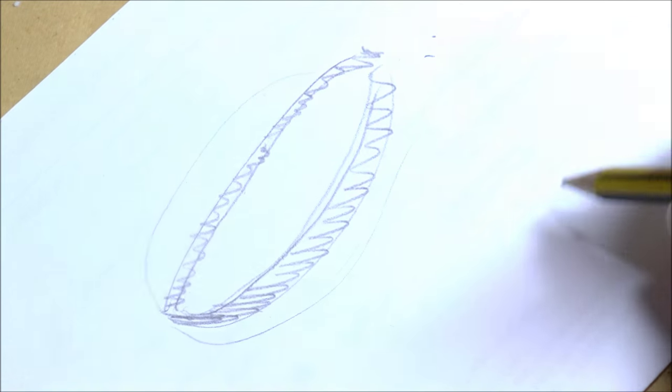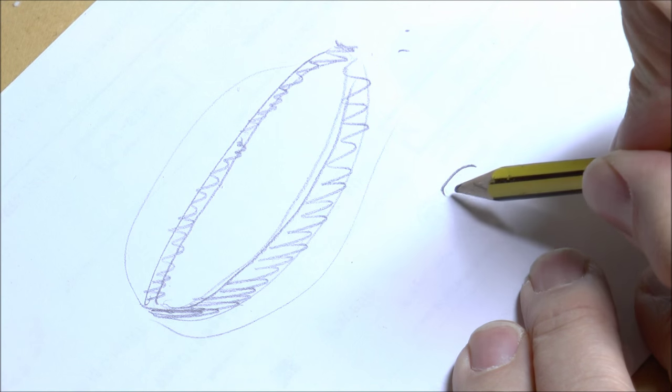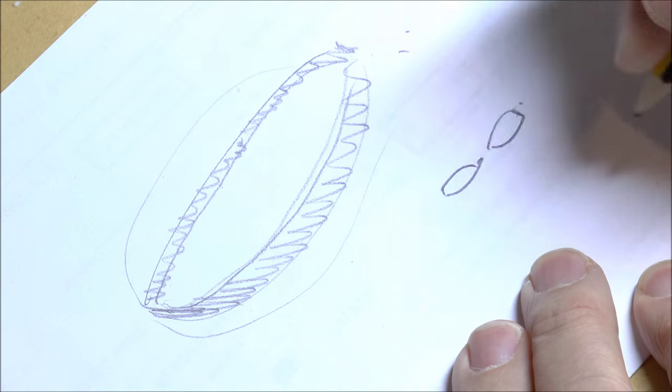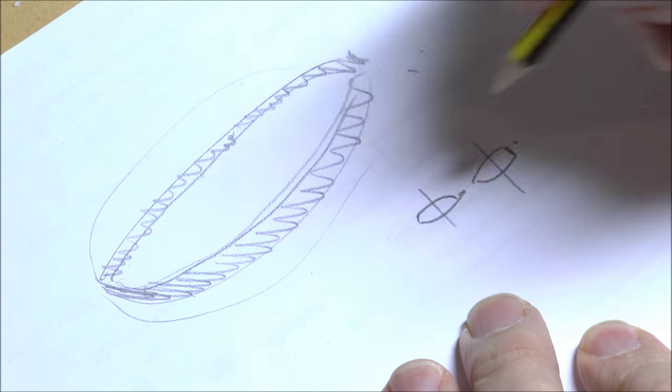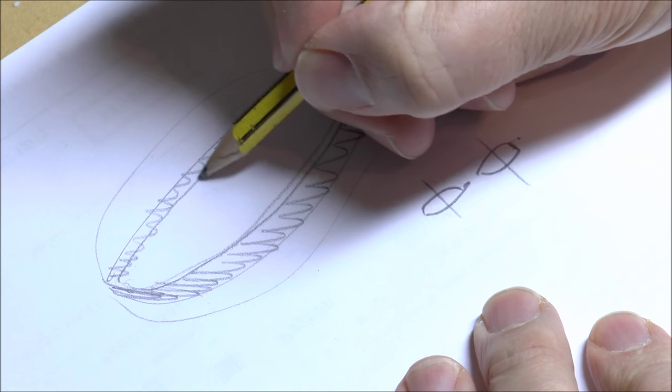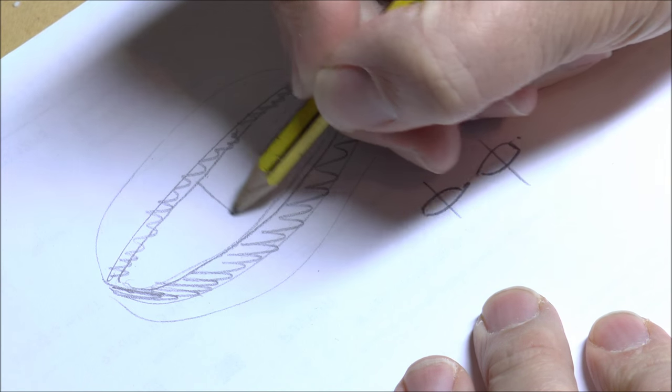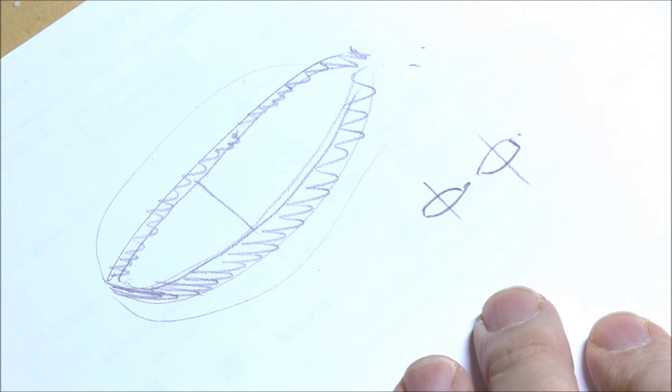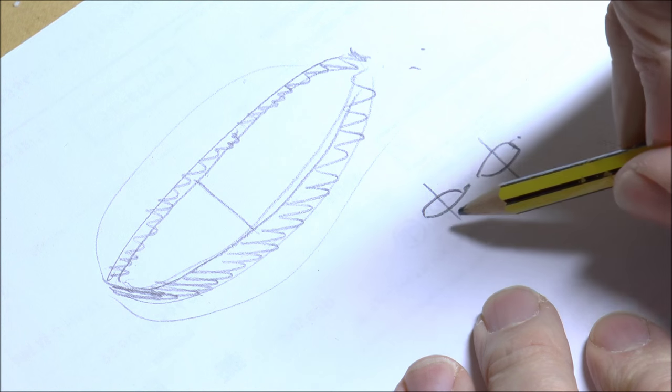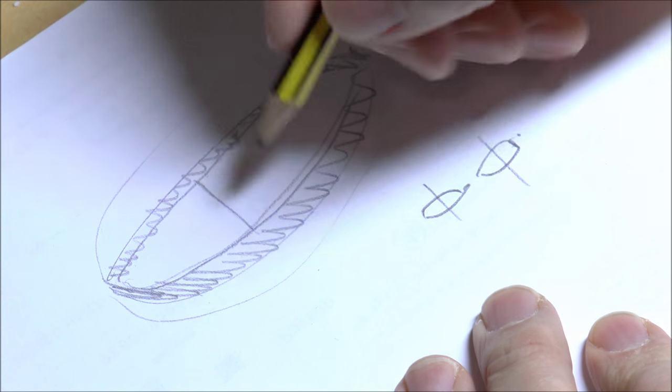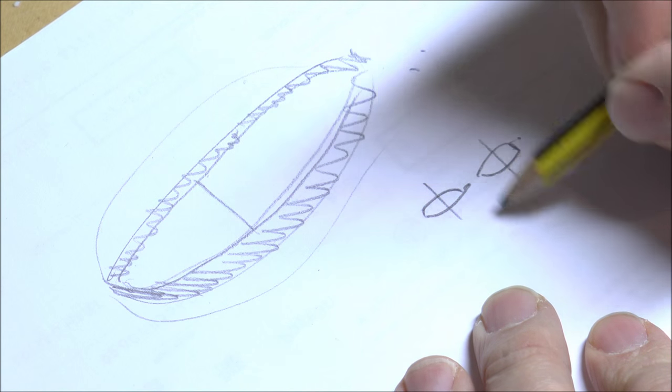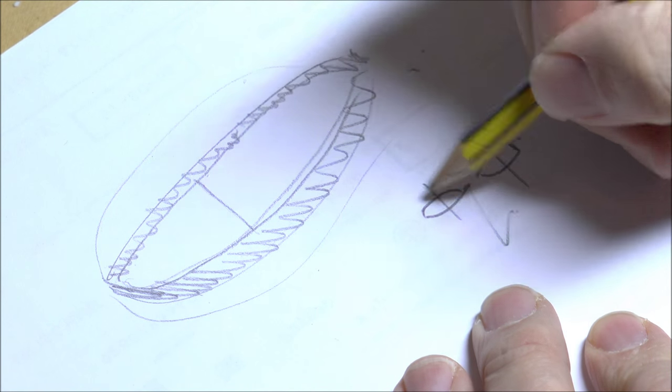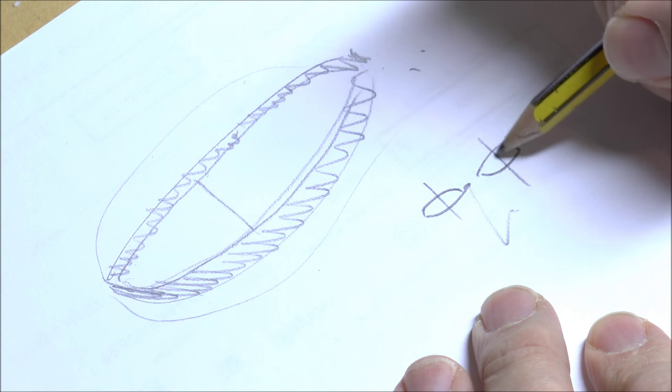Then, because with a model there's generally two eyes, you're going to work out where you actually want the pupil to go and you're going to paint a very fine black line where you want the pupil to go. You can do this multiple times because if you get this wrong, it's super easy to cover that up.